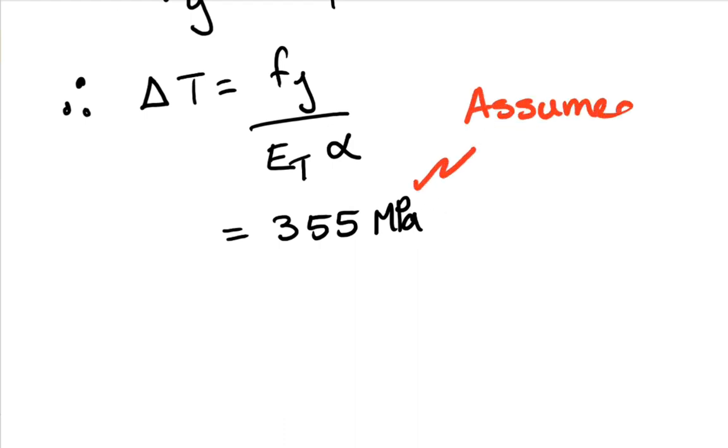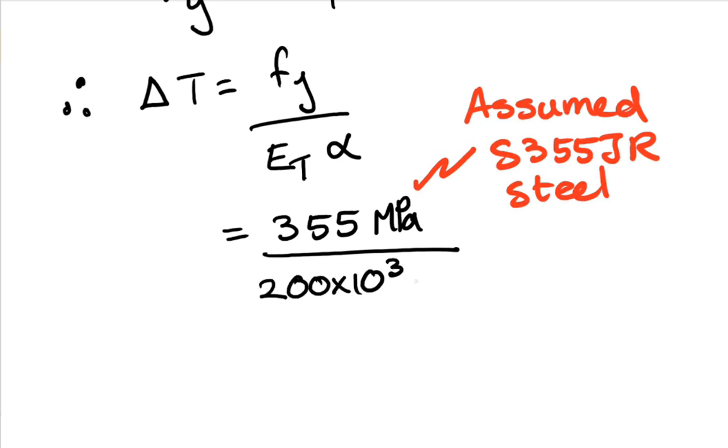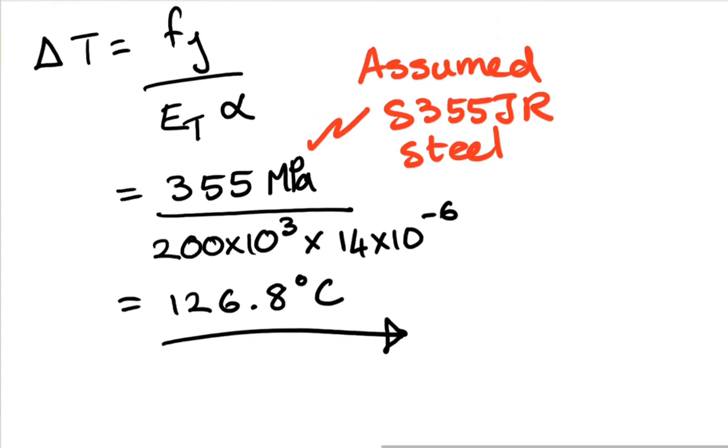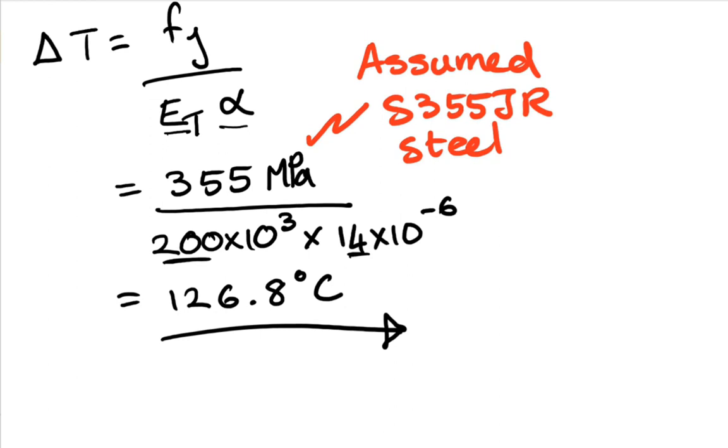And we're going to assume it's a S355JR steel. Various steel types available. Divided by 200 times 10 to the 3. Just be very careful with units because it's 200 GPa times 14 to negative 6. And this is 126.8 degrees Celsius, which once again is actually quite a low temperature. In fire being 800, 900 degrees Celsius is a gas temperature. This is way below that. So once again you'll see that if something expands or is heated up and cannot expand it will reach failure very quickly. And this is a function of Young's modulus and coefficient of thermal expansion, has nothing to do with length.